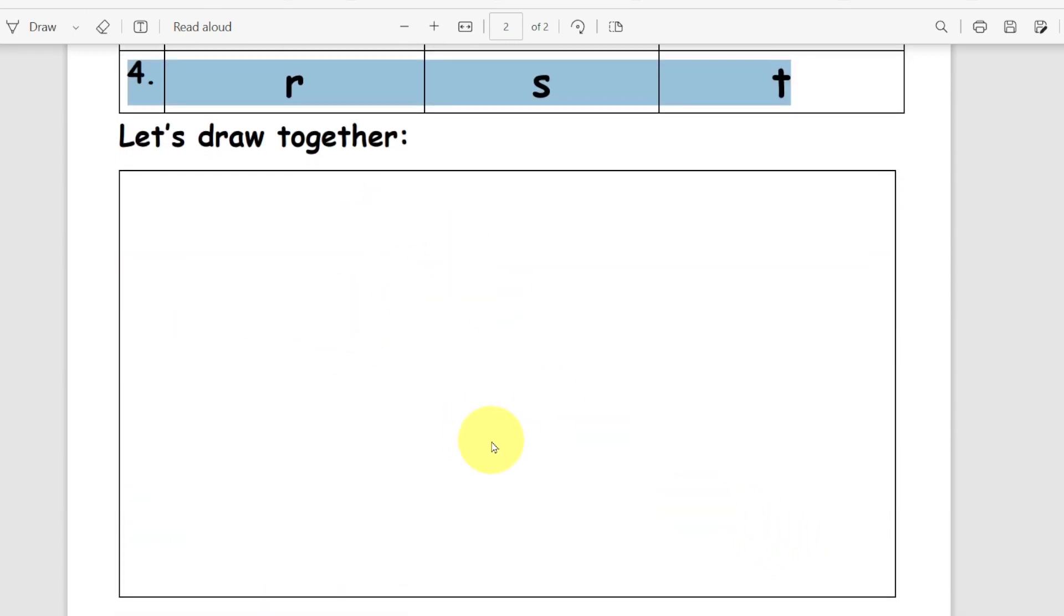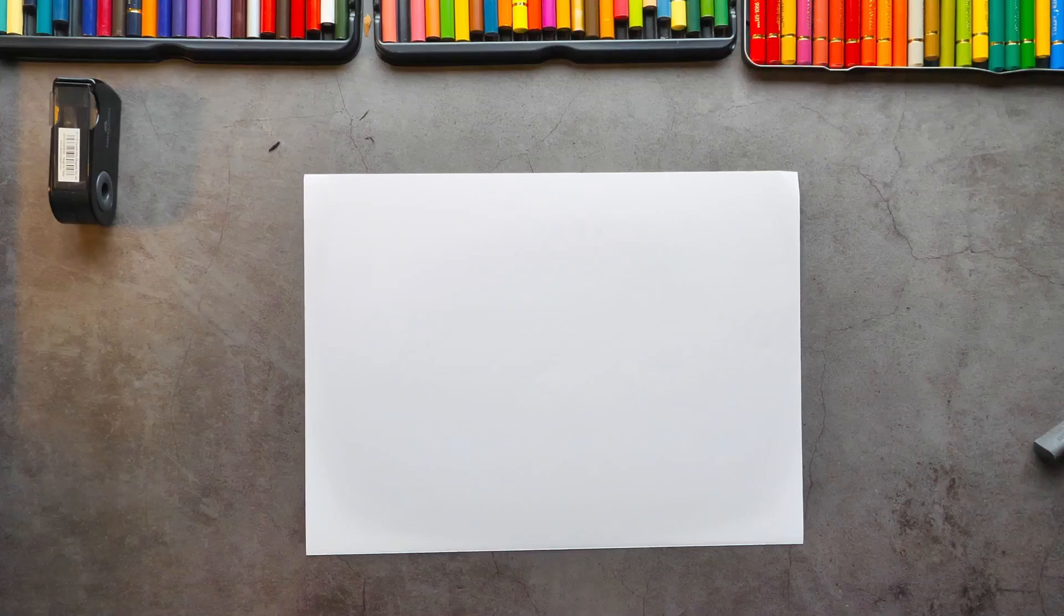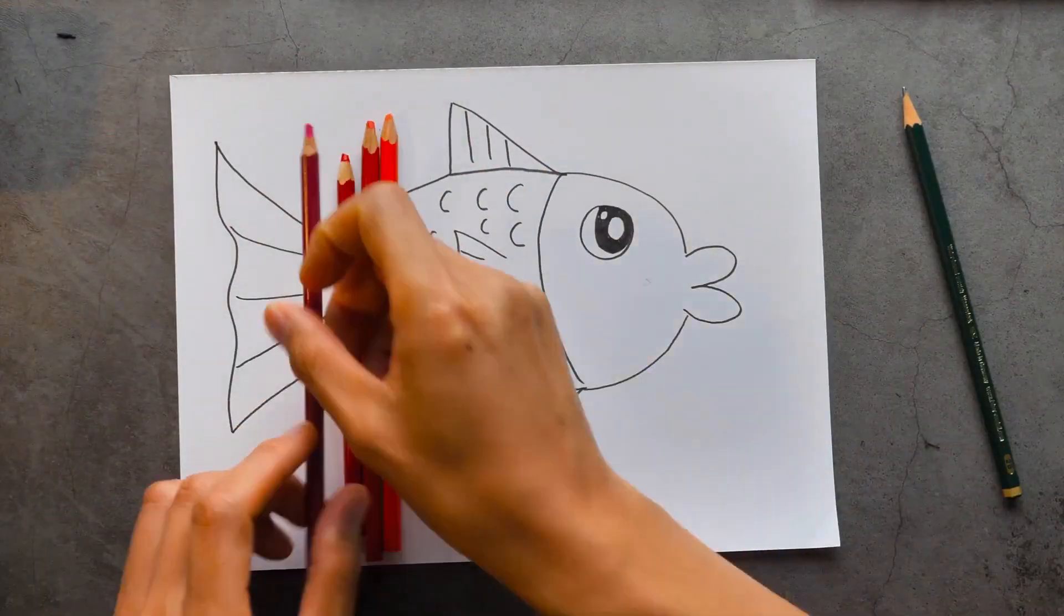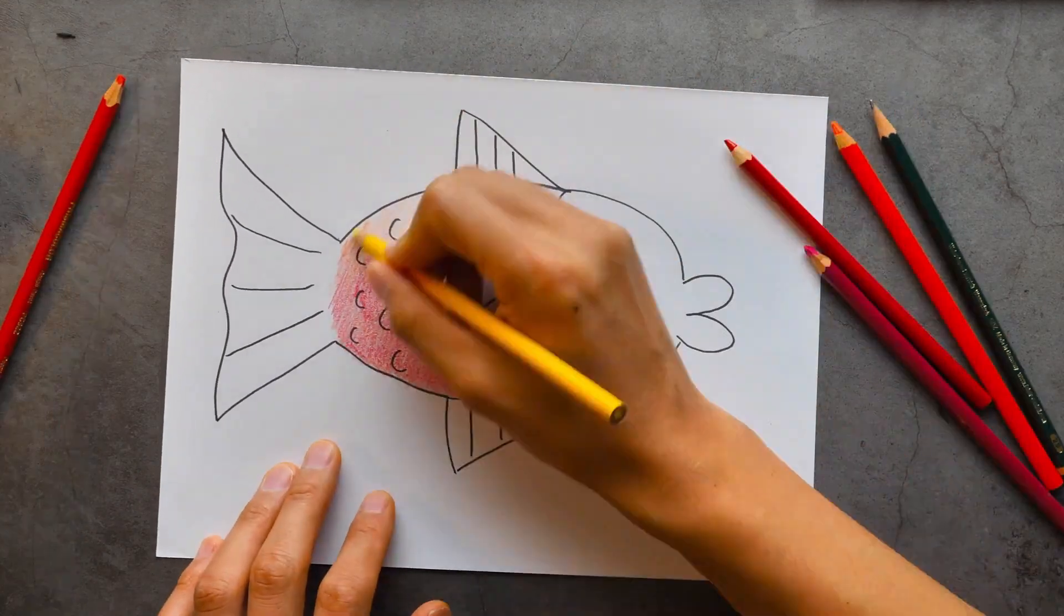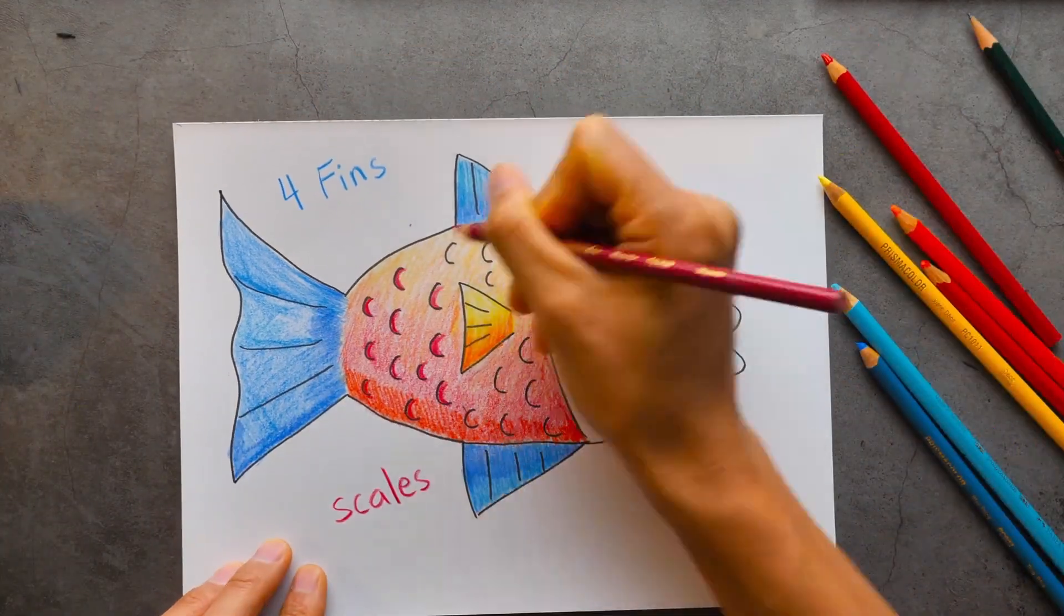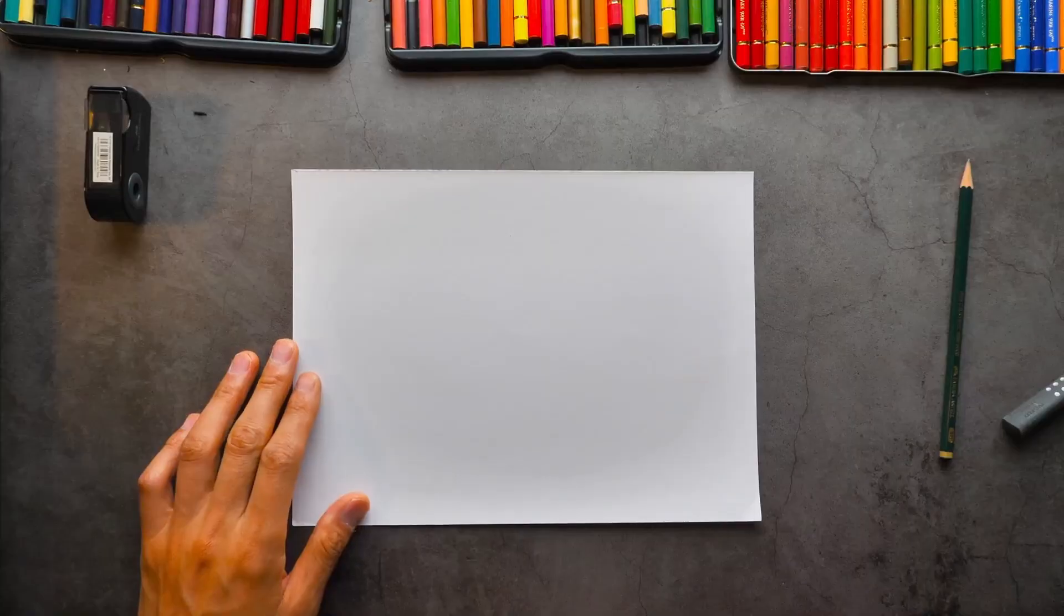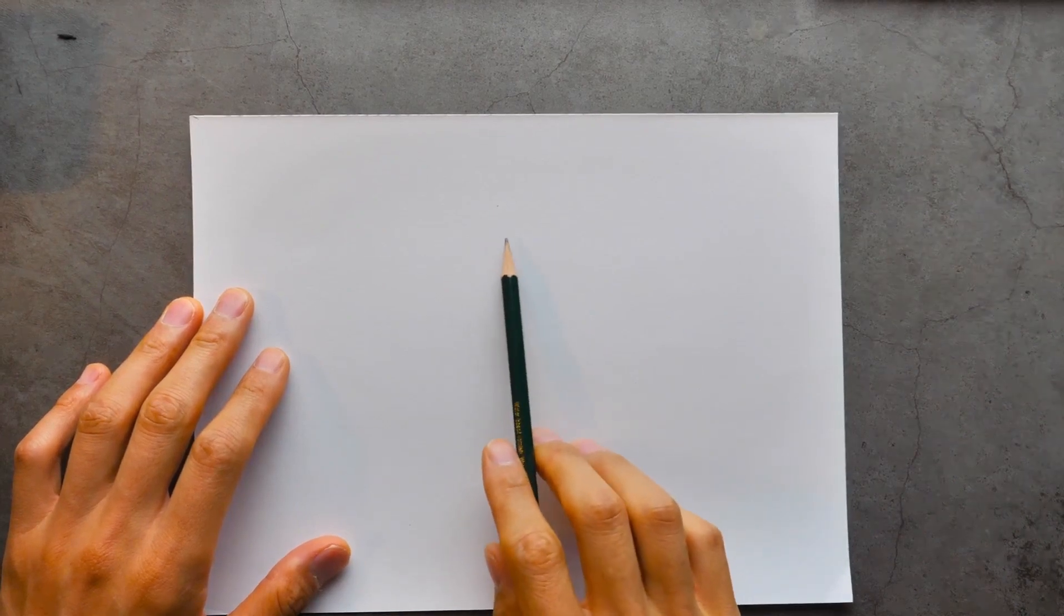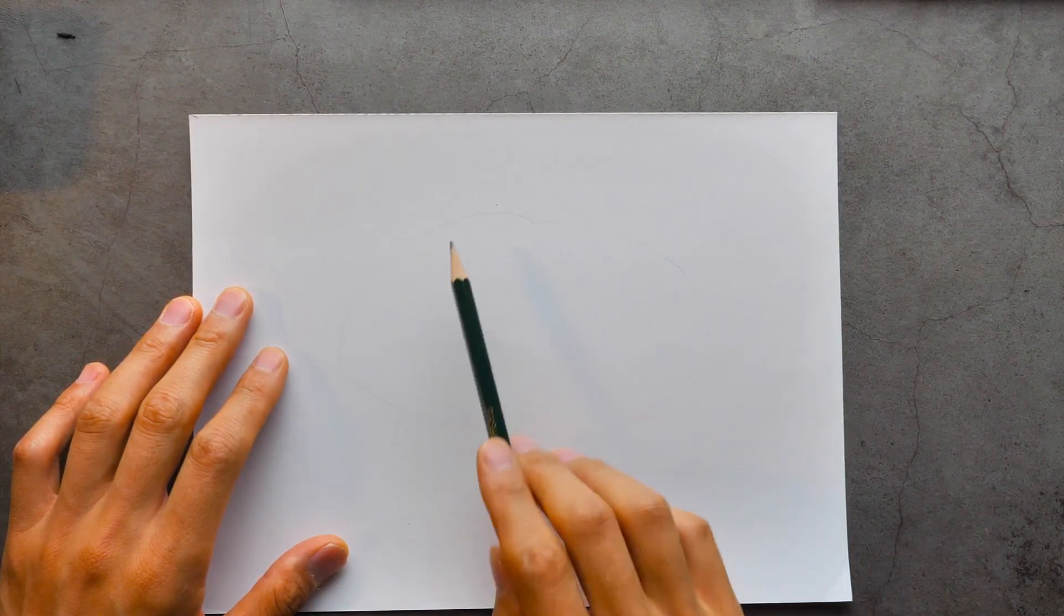Now let's draw together. A, B, C, D, E, F, G, H, I, J, K, L, M, N, O, P, Q, R, S, T, U, V. All right. Today we're gonna draw a fish. All right, let's zoom in here. And the fish is gonna look like this. So we're gonna draw an oval here.